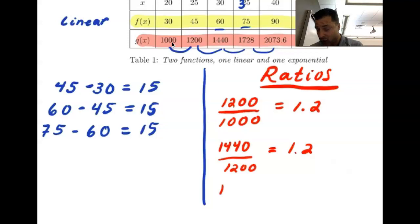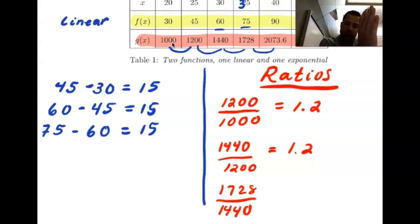If you take 1728 and divide it by 1,440, right? The next in line for the y value divided by its previous y value, you get 1.2.